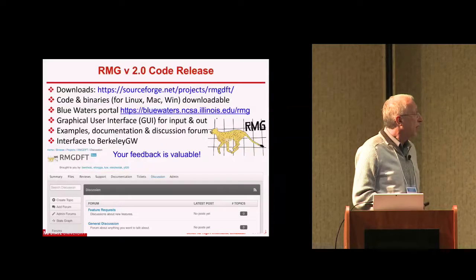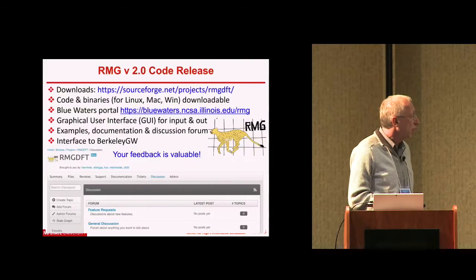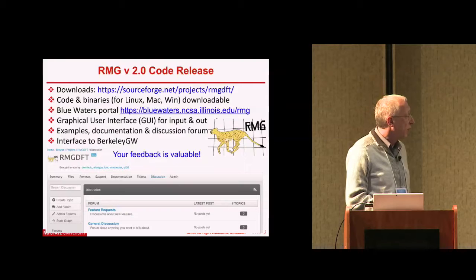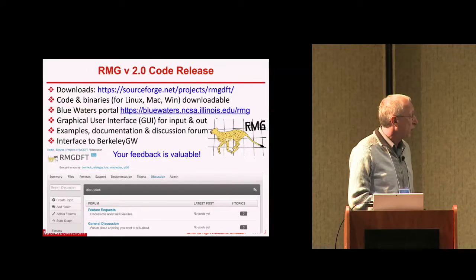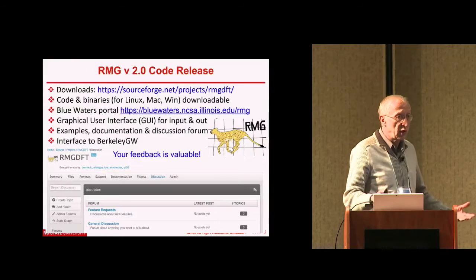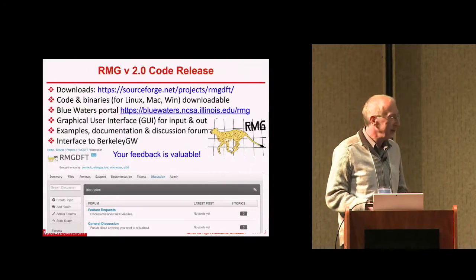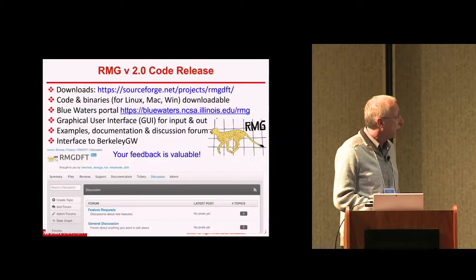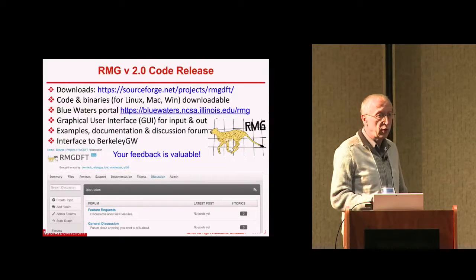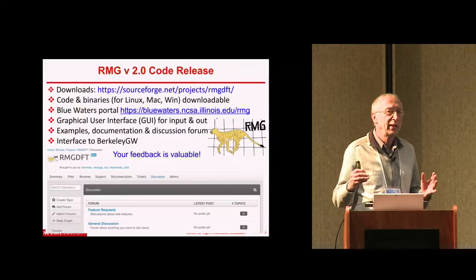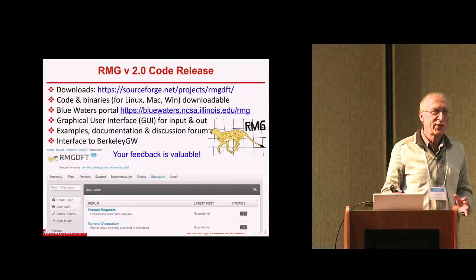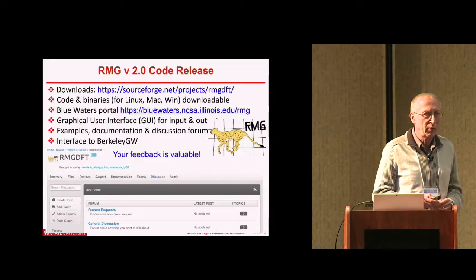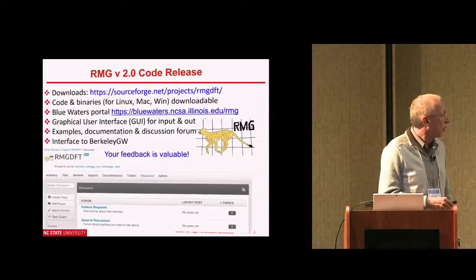This used to be a version 1 code release; now there's going to be a version 2 using the same structure. It sits on SourceForge — there are binaries and documentation, including binaries for Linux, Mac, and Windows. You can run it on your laptop, on a cluster, or on Blue Waters, and there are explicit instructions for how to compile and run it on Blue Waters. For supercomputers, putting out binaries is not that useful because every supercomputer is unique.